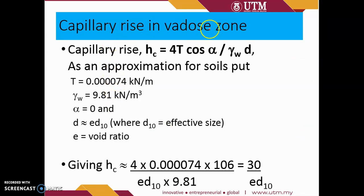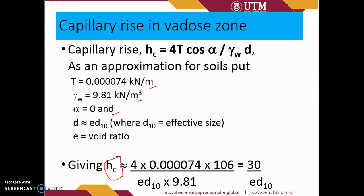In the vadose zone, there is a way to calculate the height of capillary rise, denoted hc. We use the tension of the attractive force along with the unit weight of water, and we assume the contact angle alpha in the soil grain is zero.